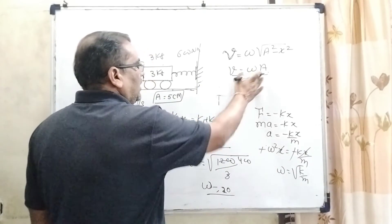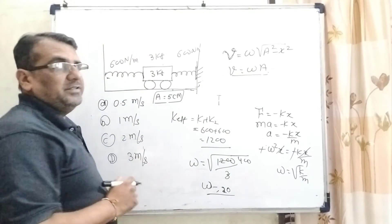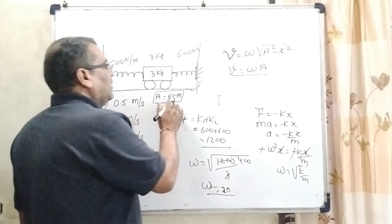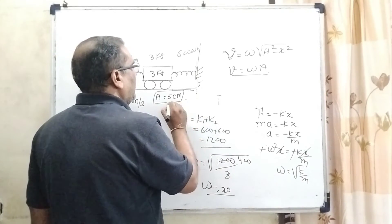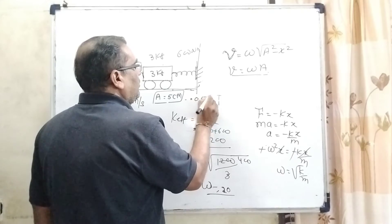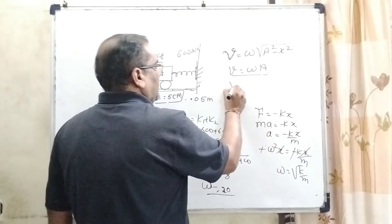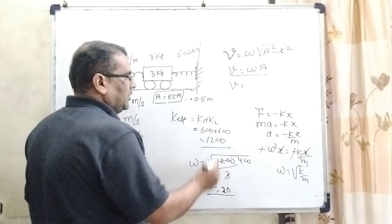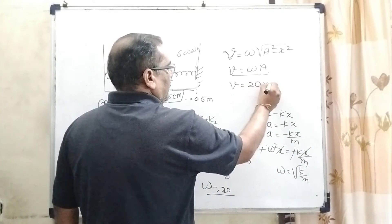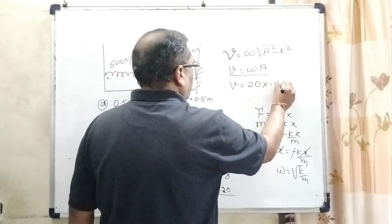Here what is the amplitude given? 5 centimeter. Let us first convert into meter and divide it by 100, then we get 0.05 meter. Okay, here we have already found out, it is 20 and 0.05.